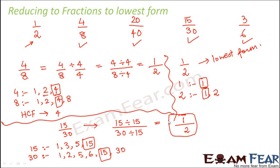But we can reduce 4 by 8 to 1 by 2. We can reduce 15 by 30 to 1 by 2. Similarly, we can reduce 3 by 6 also to 1 by 2. Try it out yourself. You can even reduce 20 by 40 to 1 by 2. So you can try these exercises yourself so that you get a hold of it. So this is how we reduce fractions to their lowest forms.